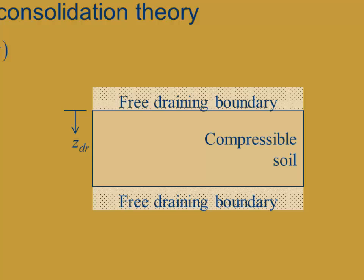We'll define the depth into the compressible layer from the top of the drainage boundary as z sub dr. Next we need to introduce the concept of the maximum drainage distance. This is the longest path that any molecule of water has to travel to get out of the compressible soil to a free boundary. In this case, the water above the middle height of the clay layer will travel to the top boundary, and the water below mid-height will travel to the lower boundary. So the greatest distance any water molecule has to travel is from the middle out, and the maximum drainage distance, h sub dr, is half the thickness of the layer, or the layer has a thickness of 2 times h_dr.